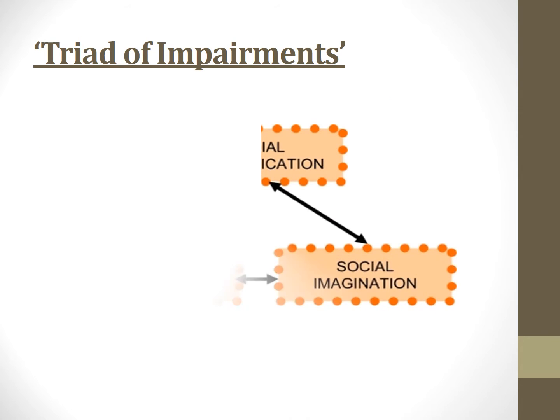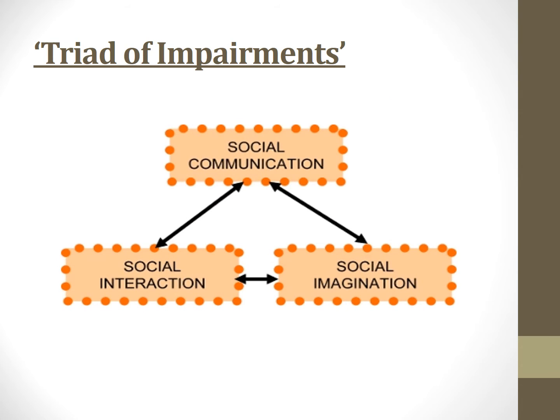In the 1970s Dr. Lorna Wing came up with another way of explaining autism called the Triad of Impairments, where she observed that all autistic people, however different we are, share difficulties in three areas of life: social communication, social imagination and social interaction. I think that was a useful step forward at the time, but it's probably been superseded by more modern approaches such as neurodiversity.